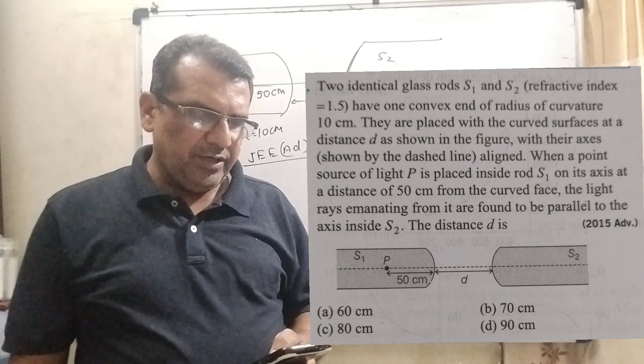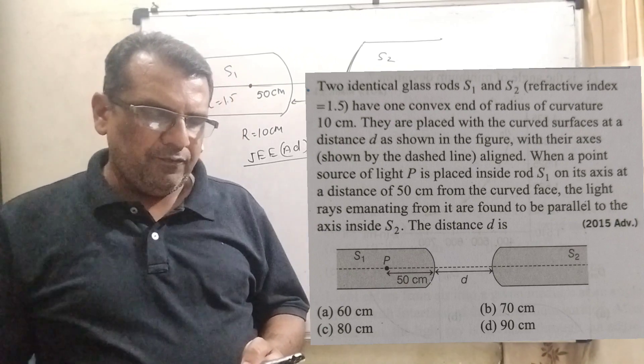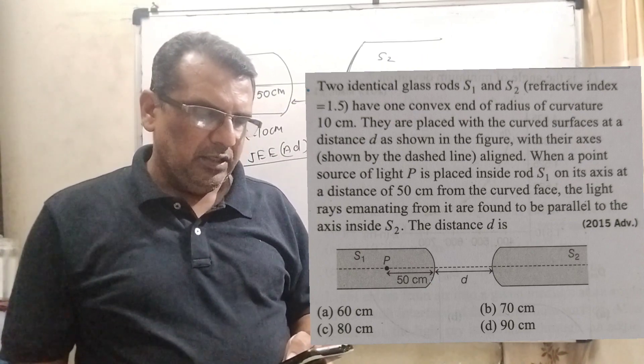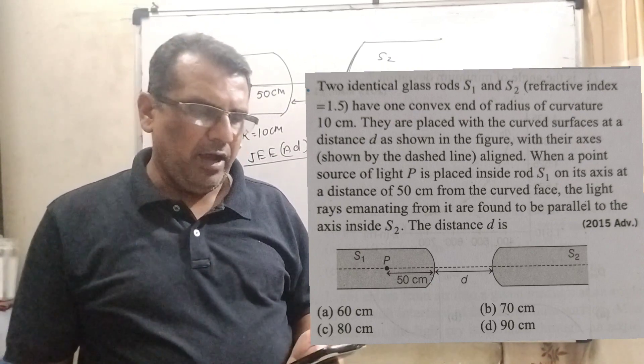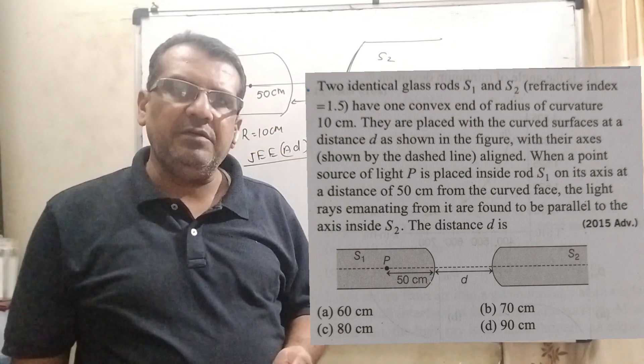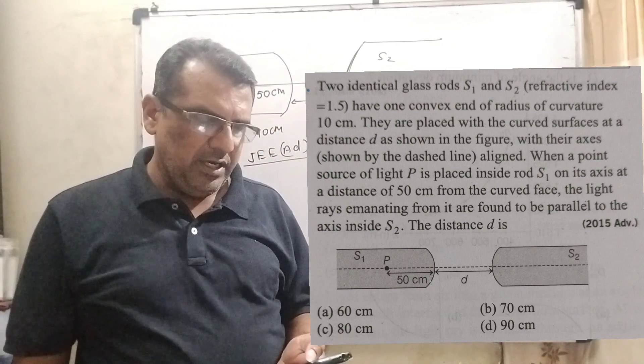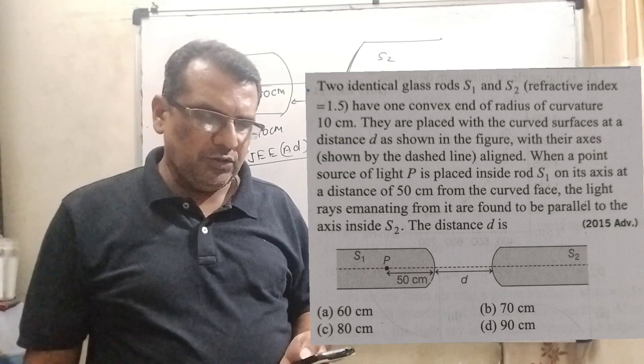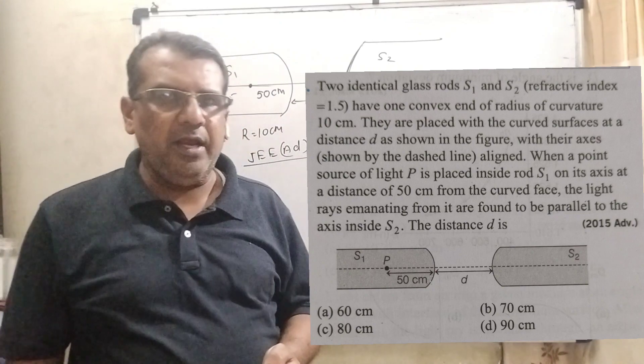The light rays emanating from it are found to be parallel to the axis inside S2. The distance d is - here we have given four options. Option A: 60 cm, Option B: 70 cm, Option C: 80 cm, and Option D: 90 cm. And this question is asked in 2015 JEE Advanced.